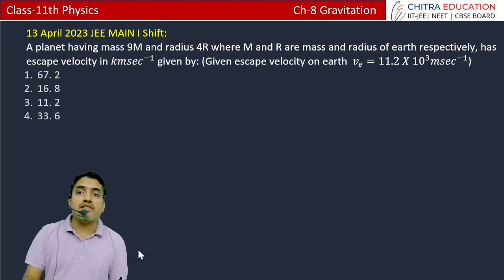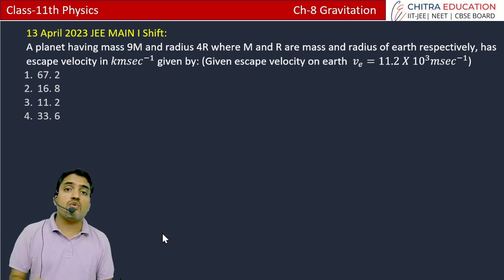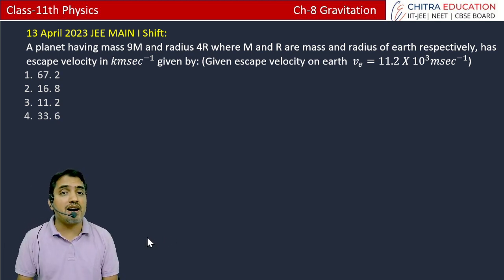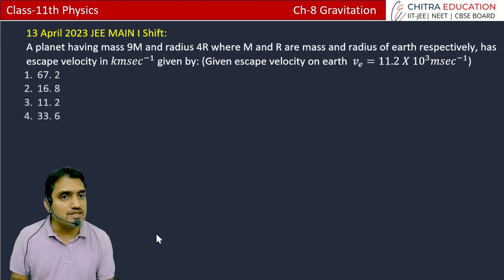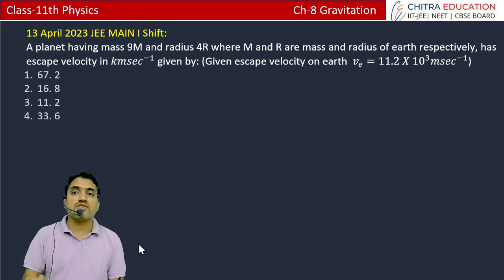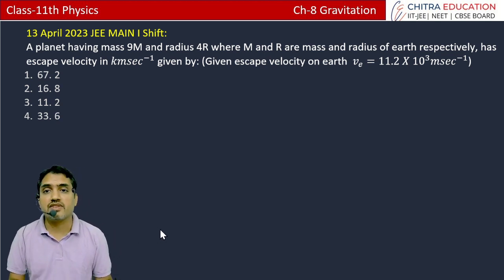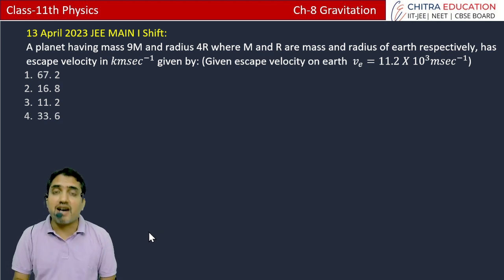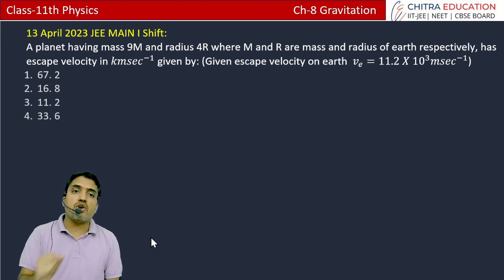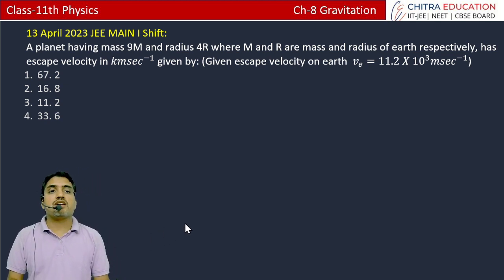In the question given: a planet having mass 9m and radius 4R where m and R are mass and radius of earth respectively. It has escape velocity in km per second. And here we have the earth's escape velocity given is 11.2 × 10³ meter per second.